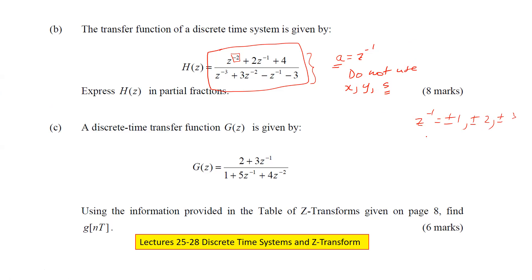If you look at Z to the minus one equal to one for argument's sake and try that in here, that will give you one plus three minus one minus three, which is zero. So first off, Z to the minus one minus one is one of the roots. It's order three, so you need two other roots.